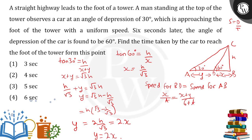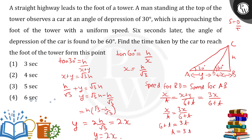Using the relation y = 2x, we substitute: x plus y becomes x plus 2x = 3x. So the equation becomes x upon t = 3x upon (6 + t). Cancelling x from both sides: 1 upon t = 3 upon (6 + t), giving 6 + t = 3t, so 2t = 6, and t equals 3 seconds. Option A is correct. The key was using the distance-speed relationship along with the trigonometric results.